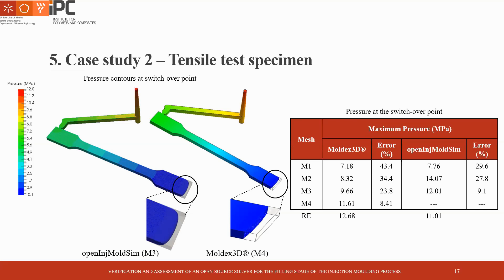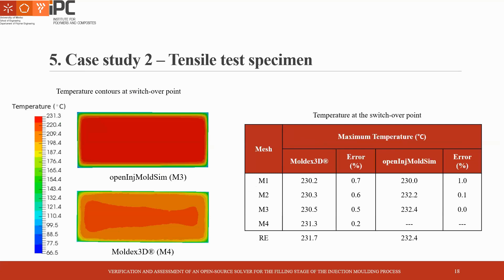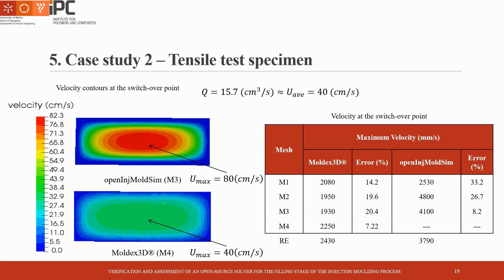Applying Richardson's extrapolation to all levels of refinement and measuring the errors obtained with each mesh, we noticed that MoldX3D needed at least one more level of refinement in order to reach the same magnitude of errors as Open-Inge MoldSim. Analyzing the temperature contours in the cross-section, MoldX3D gives a non-physical temperature contour. We suspect this is due to the low density of cells in the core region of that cross-section. However, since MoldX3D is a commercial software, certain tools are not available to the user and we could not confirm our theory. Applying Richardson's extrapolation for the temperature field, even for the coarsest levels of refinement, both softwares handle temperature well with errors below 1%.